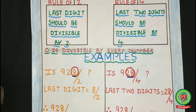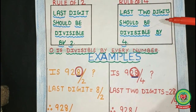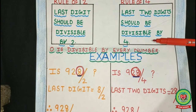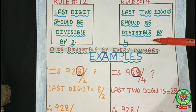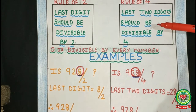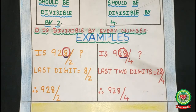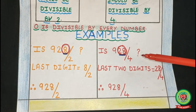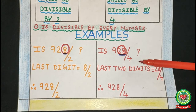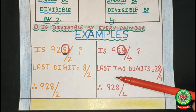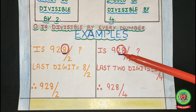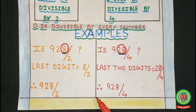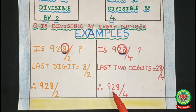Let us discuss the divisibility rule of 4. The divisibility rule of 4 is: the last 2 digits should be divisible by 4. For example, is 928 divisible by 4? First we have to find the last 2 digits. The last 2 digits are 28, and 28 is divisible by 4. Therefore, the number 928 is divisible by 4.